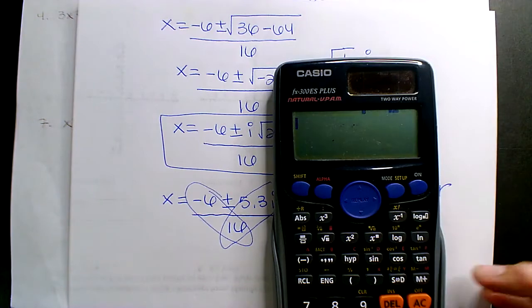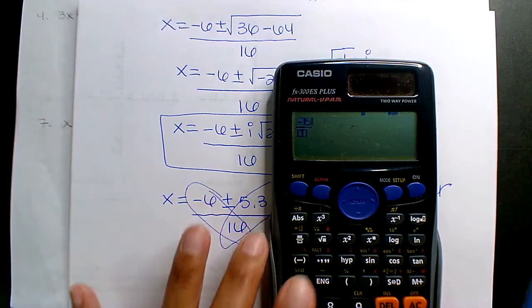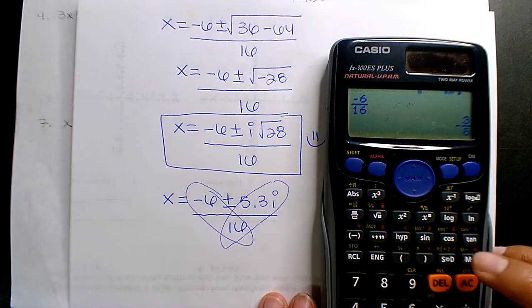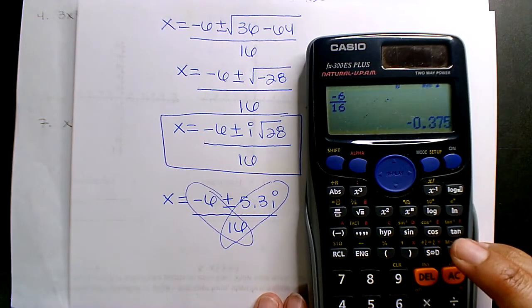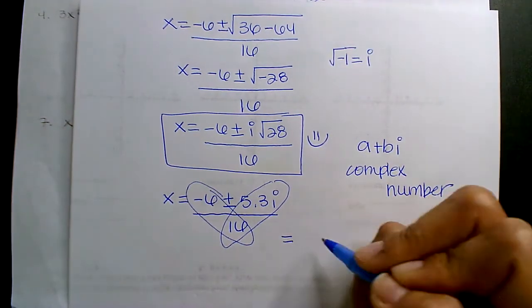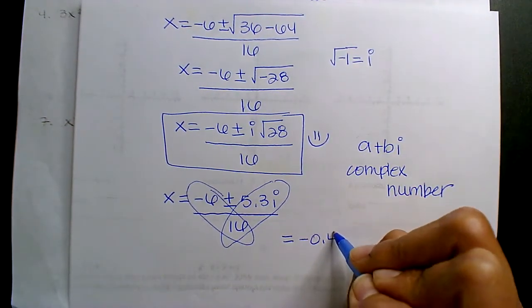So what is negative 6 divided by 16? I get negative 0.4. We'll just go to the tenth. So that gives me negative 0.4.